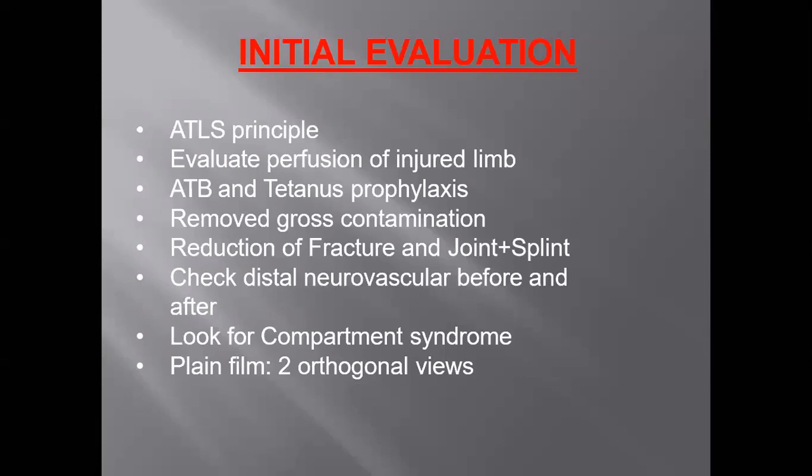The recommended antibiotics for a mangled extremity are first-generation cephalosporin and gentamicin. If the wound is severely contaminated, we can give high-dose penicillin. If the patient is allergic to penicillin, we can give metronidazole to prevent anaerobic infections. Tetanus immunoglobulin has to be given to prevent Clostridium tetani infection.